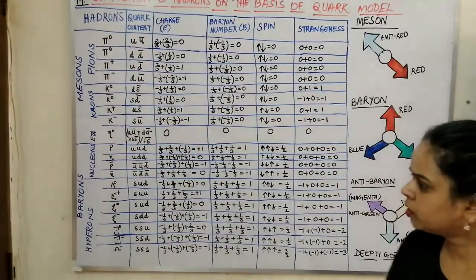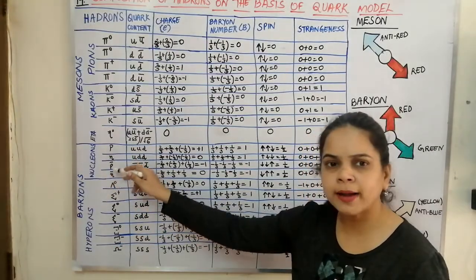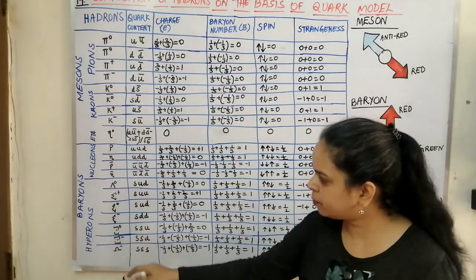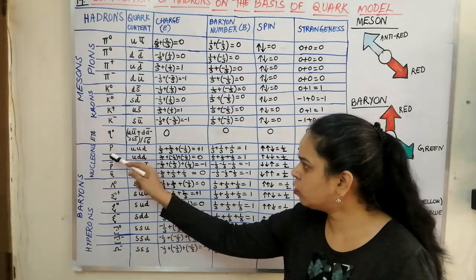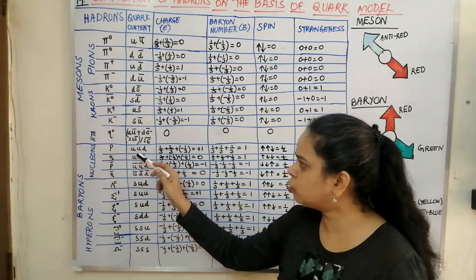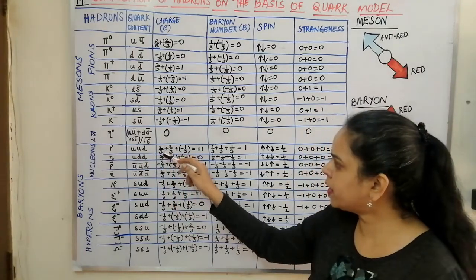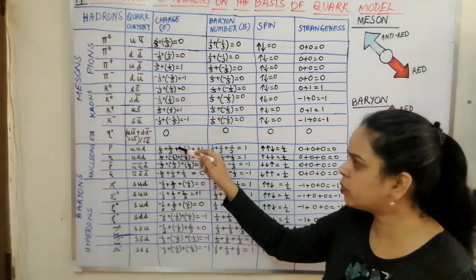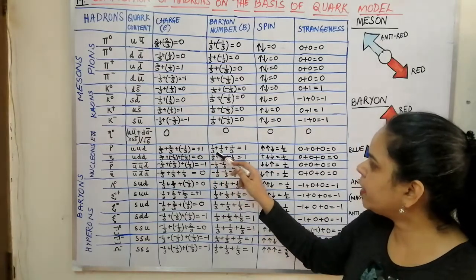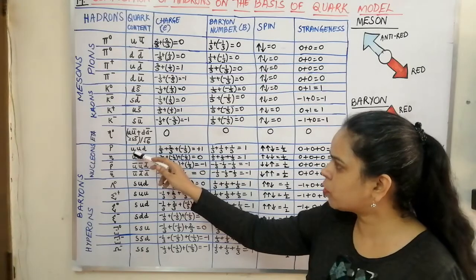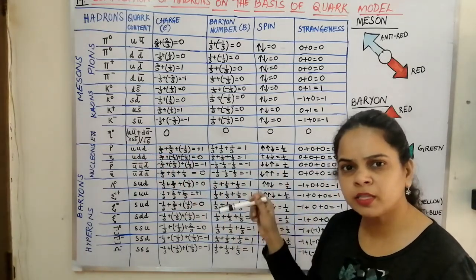In the baryon family we have nucleons and hyperons. For the proton, it is a combination of 2u quarks and 1d quark. The charge will be 2/3 + 2/3 − 1/3 = 3/3 = +1. The baryon number is 1/3 + 1/3 + 1/3 = 1, and we know the proton has baryon number +1.